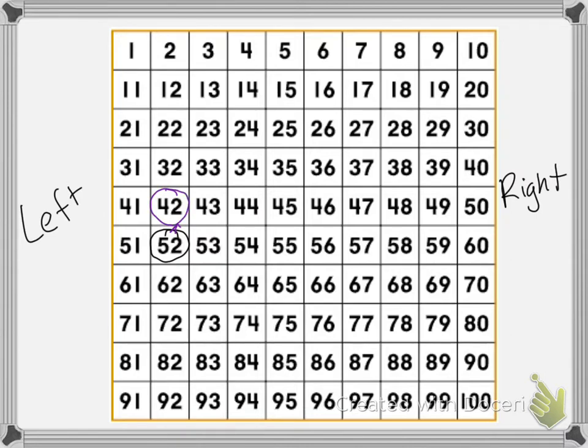What number is below 52? Below would be going down, so the number below would be 62. What number is to the right of 52? Right goes to this side, so that's 53, and the number to the left is 51.